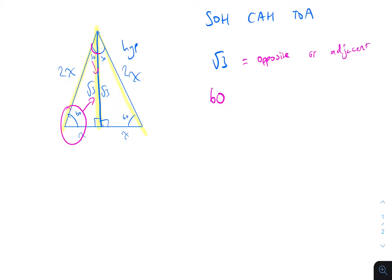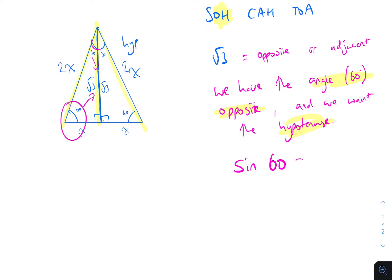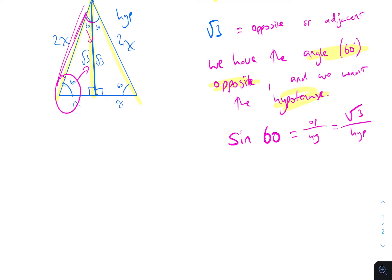I'm going to go with the 60 degree angle. So we have the angle, which is 60 degrees, and we have the opposite side, and we want the hypotenuse. If we've got the angle, the opposite, and we're after the hypotenuse, you should be able to see clearly which ratio to use. So we do: sine 60 equals opposite over hypotenuse, which is the square root of 3 over the length L.